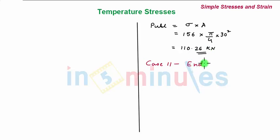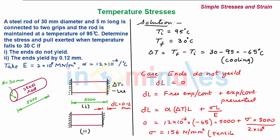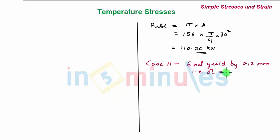Now let's consider the second case when your ends yield by 0.12 mm, that is delta L of minus 0.12 mm. Again we write the equation: minus 0.12 mm equals alpha 12 times 10 to the power minus 6, delta T is minus 65 multiplied by 5000.